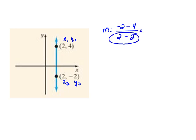But at this point we see that we have a 0 in our denominator. When we have a 0 in the denominator that tells us that this is undefined.